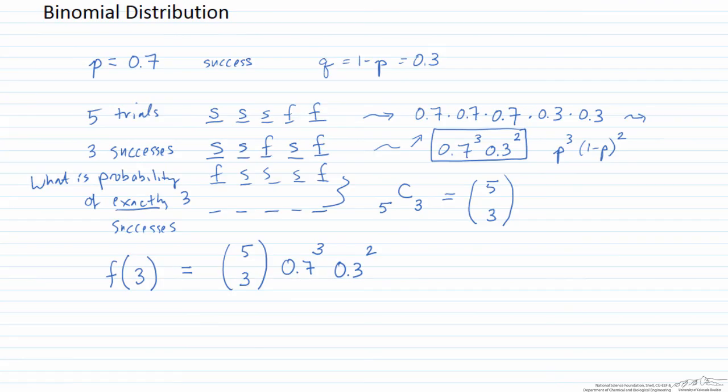In general we can write the binomial distribution if we have n trials and x successes. Remember we are talking about exactly x successes. We are not talking about at least x successes. So the f of x probability is equal to n choose x the probability of a success to the x number of trials times 1-p to the n-x.